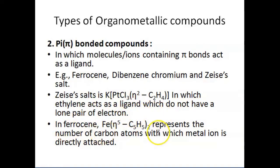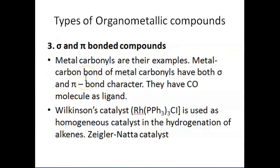In ferrocene, it represents the number of carbon atoms to which the metal ion is directly attached. The third type of organometallic compound is sigma and pi bonded compounds. Metal carbonyls are examples of this type, in which the metal-carbon bond has both sigma and pi bond character, and they have CO molecules as their ligands.